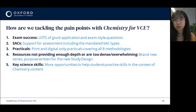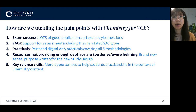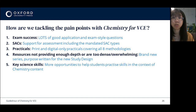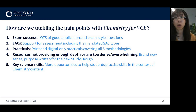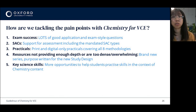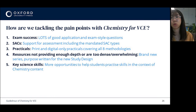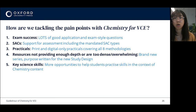To summarise, we've really tried to take the hard work out of implementing the new study design and support teaching and learning so that students are successful in VCE chemistry. To address the pain points we talked about earlier, we've made sure to include plenty of opportunities for application and exam style questions, support for SACs, and a range of practicals covering all eight investigation methodologies with enough options to fulfill the 10 hours of compulsory prac work per unit. The series is purpose written for the new study design, and our authors have been in regular contact with VCAA to help clarify key knowledge dot points. We've also been very conscious of providing more opportunities for students to practice key science skills, especially important for the area of study three outcomes for units one, two, and four.